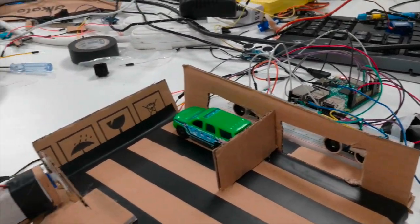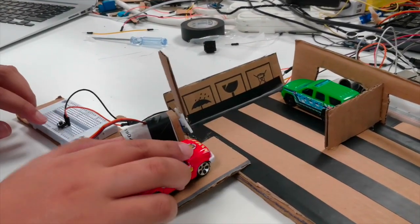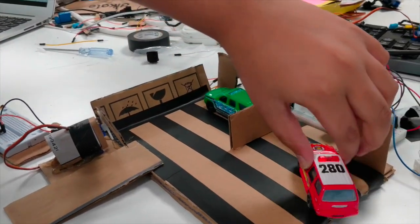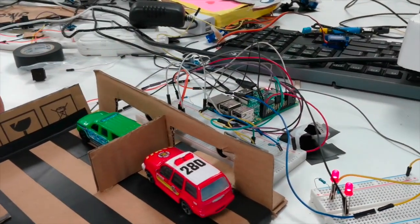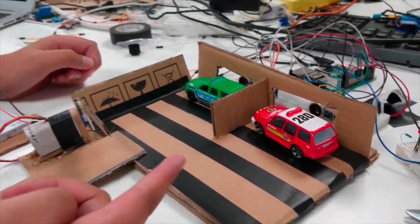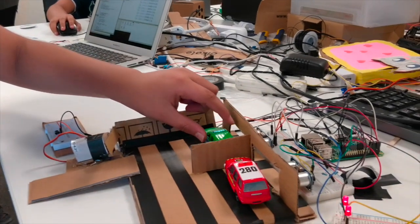You can do the same thing with this car. The gate closes and then you can park here. The LED will turn on and it will detect that the car is there.